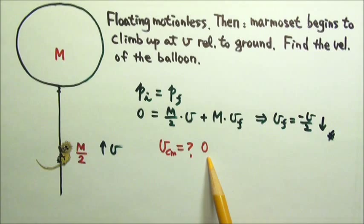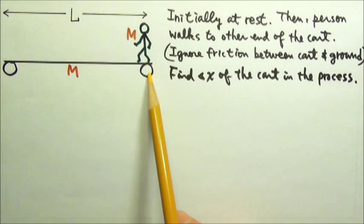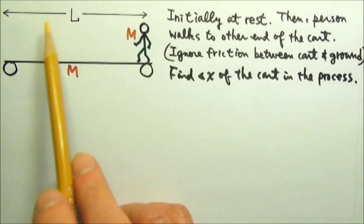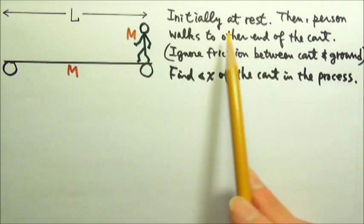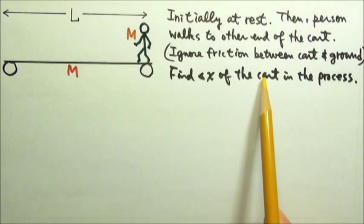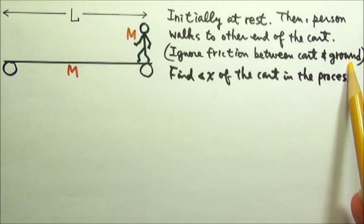A person with mass m stands at one end of a flat cart that is initially at rest. The flat cart has length L and the same mass as the person. The person then walks to the other end of the cart, and we want to find the displacement of the cart itself in this process. Ignore friction between the cart and the ground.